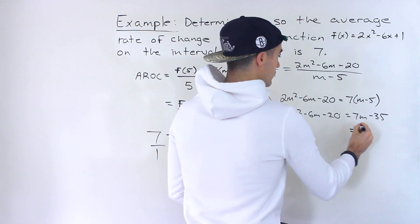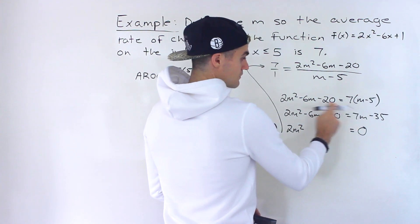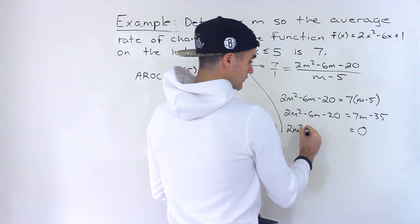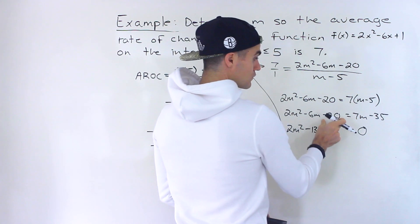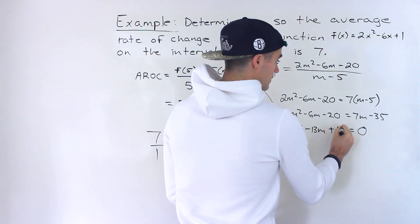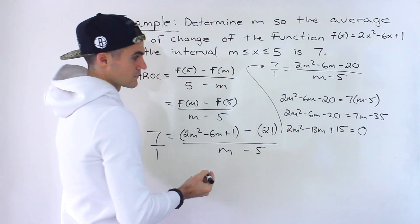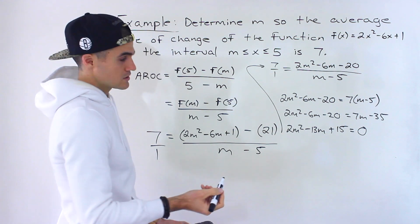And then we'll have 2m² - 6m - 20 = 7m - 35. So when we bring everything over, we'll have 2m². Bring the 7m over minus 6m minus 7m gives us minus 13m. And then negative 35 becomes positive 35, negative 20 plus 35 gives us 15.